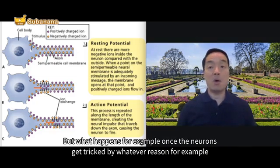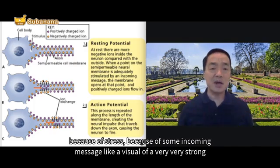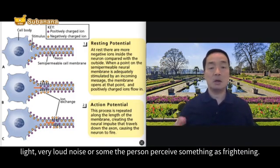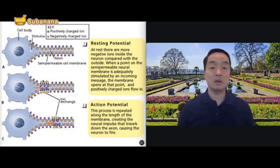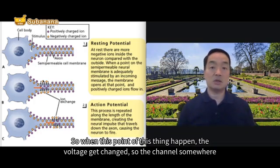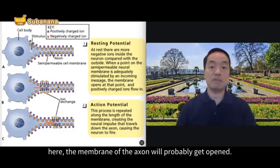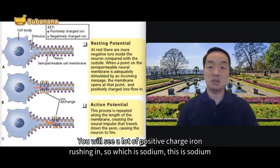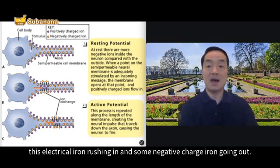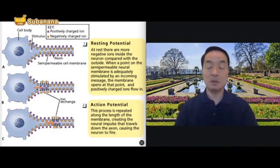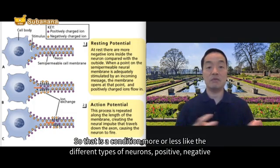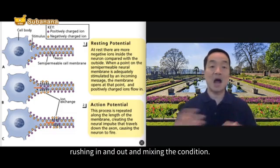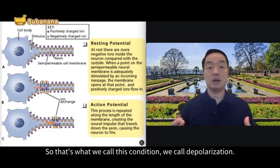But what happens once the neurons get triggered? For example, because of stress, an incoming message, a very strong light, a very loud noise, or the person perceives something as threatening. When this happens, the voltage gets changed. The channel — the membrane of the axon — will get opened. You will see a lot of positively charged ions, which is sodium, rushing in. Then some negatively charged ions go out. Positive and negative ions are mixing — we call this condition depolarization.